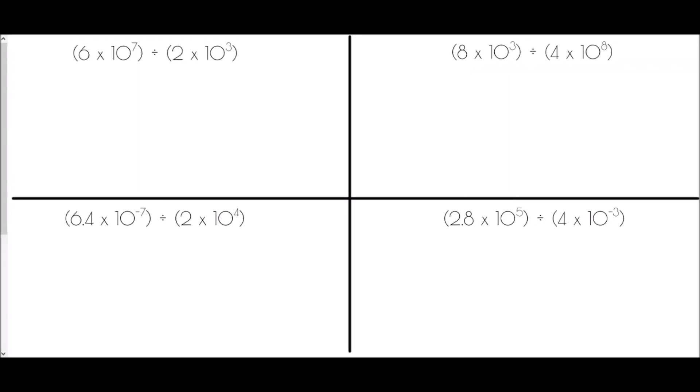Now we're going to look at division, treating it in very much the same way. We divide the two values and then divide the powers of 10. For the first example, 6 divided by 2 is 3. When dividing with indices, the rule is that we subtract — so 7 take away 3 gives 4. The answer is 3 times 10 to the power of 4.